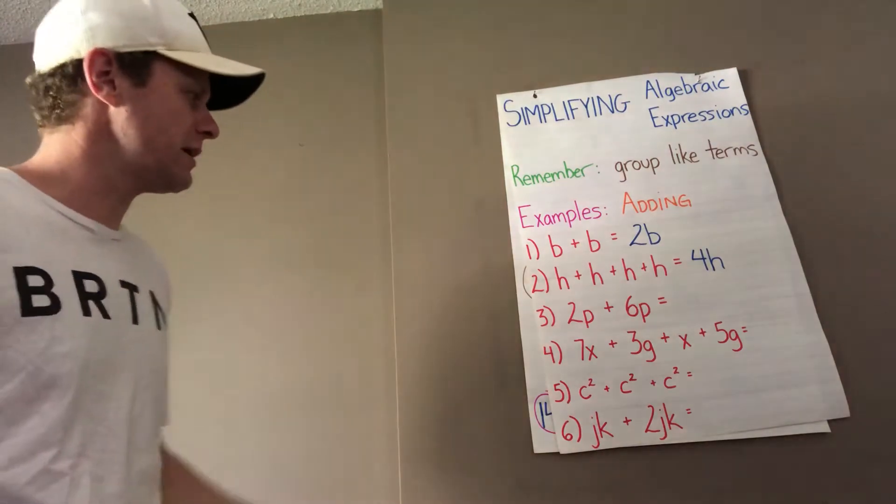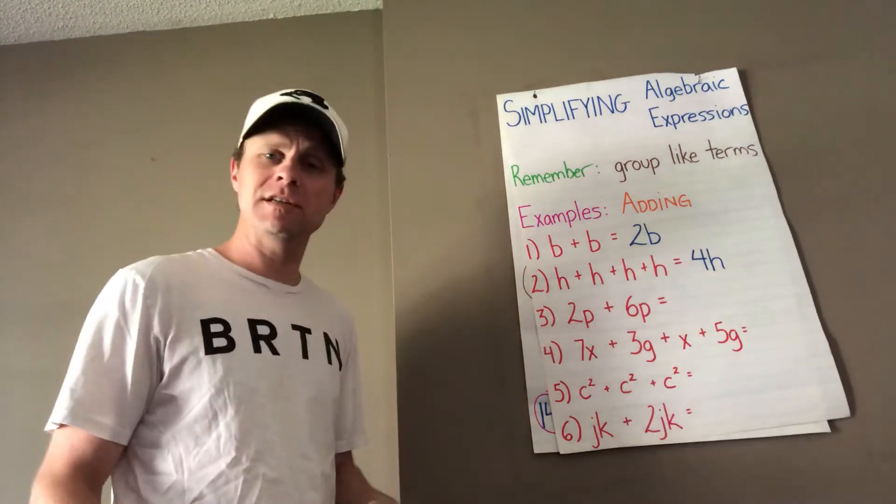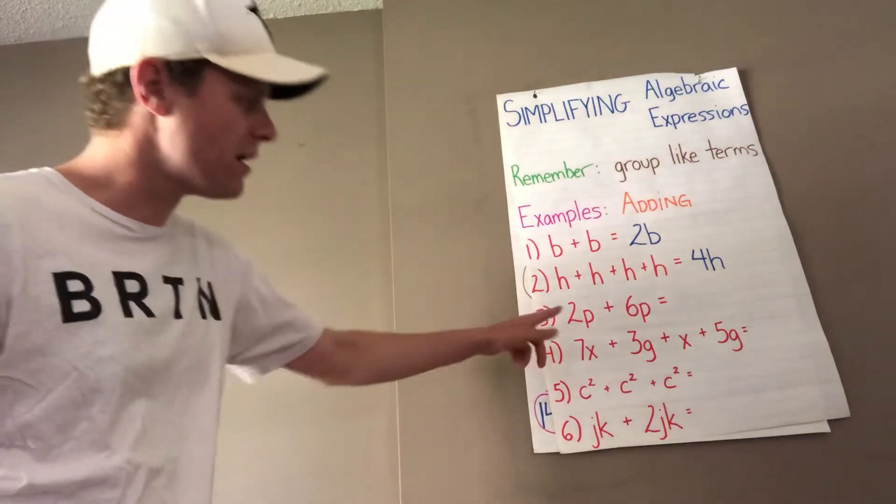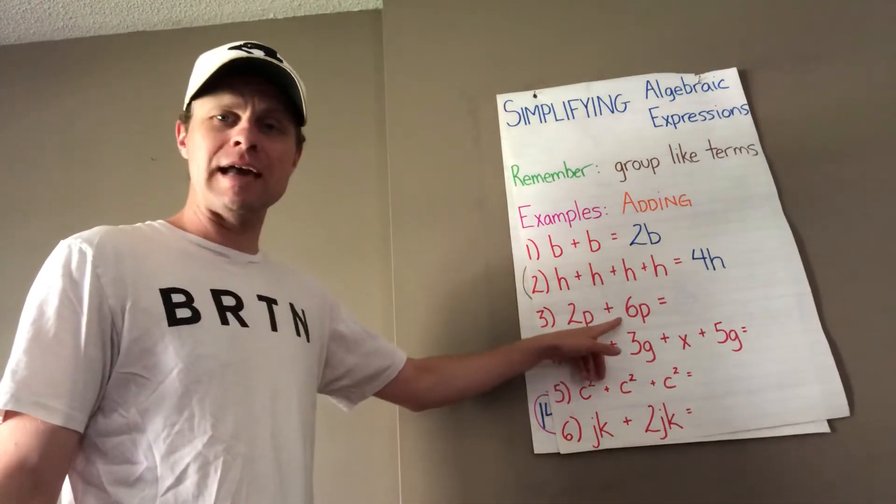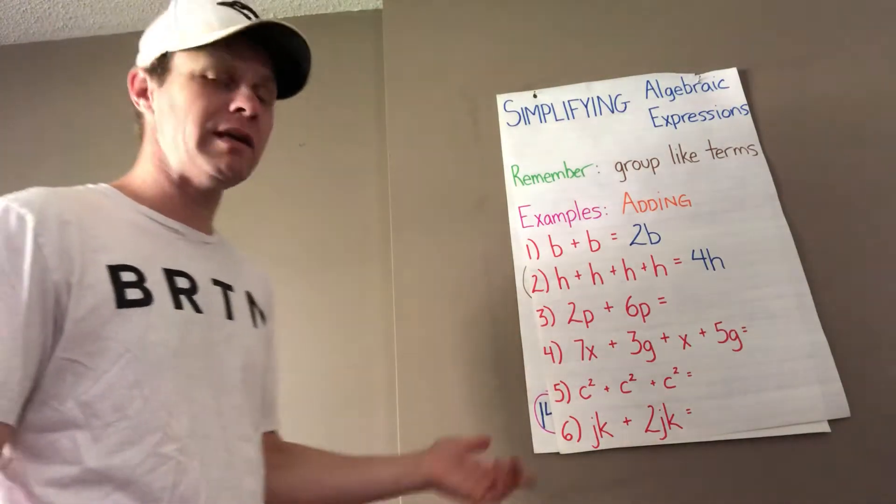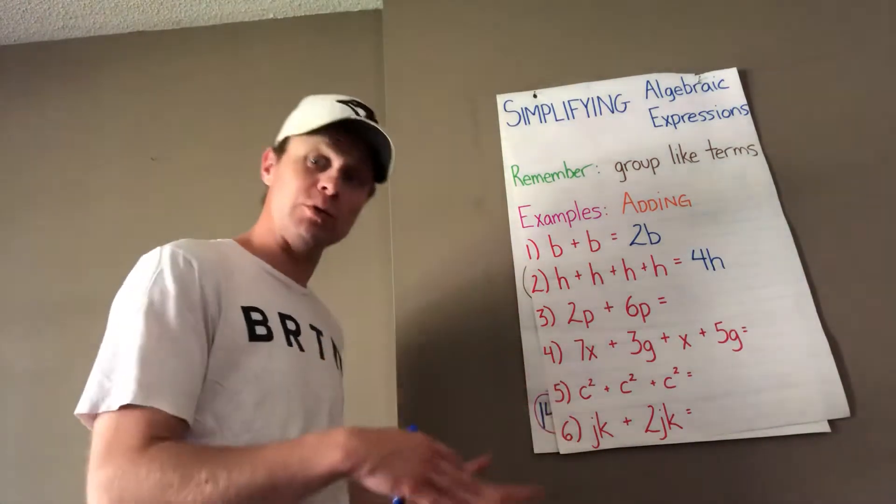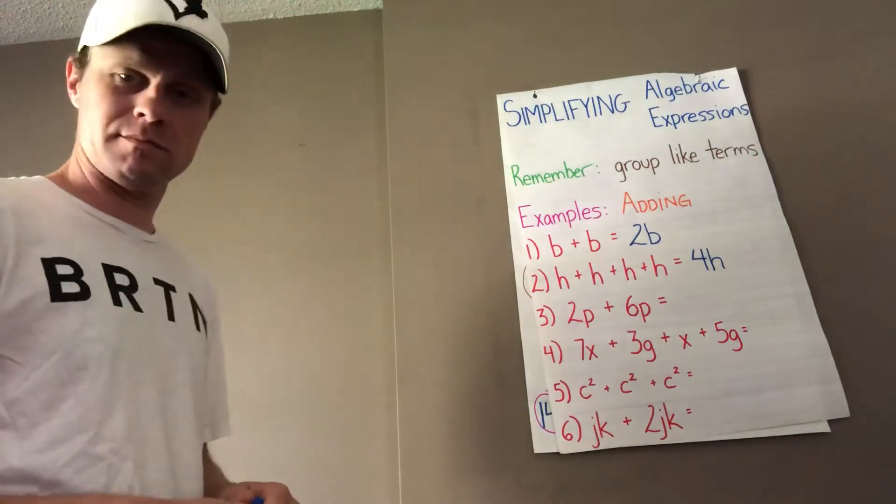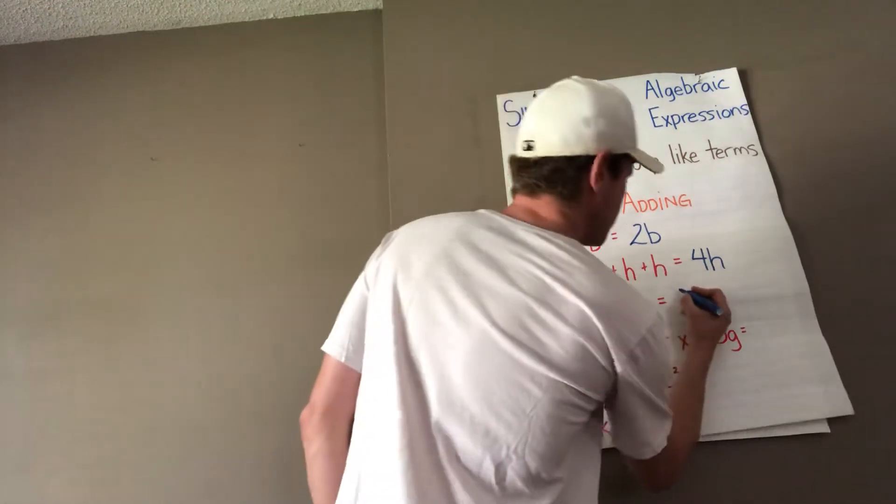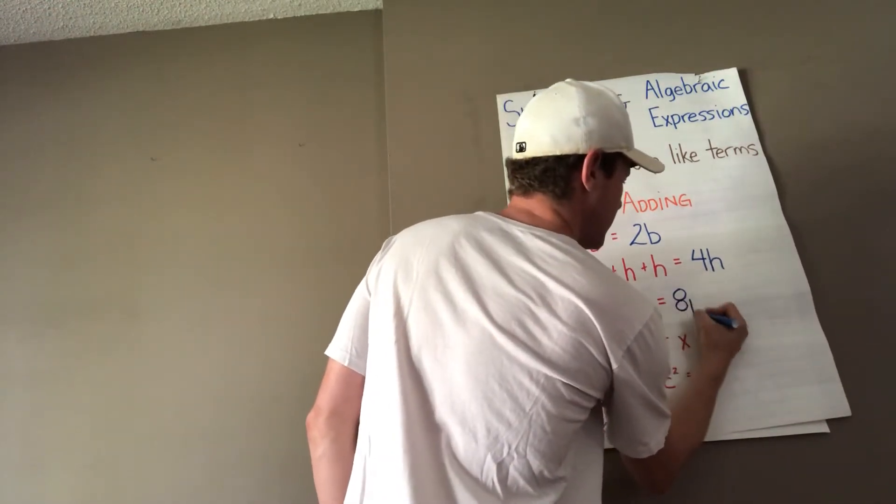Pretty simple stuff, right? It's just addition that's got some letters added into it. Number 3, we're starting with 2p and adding 6 more p to it. So what's 2p plus 6p or 2 plus 6? Good. 8p.